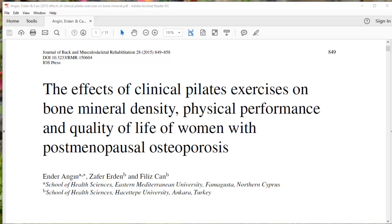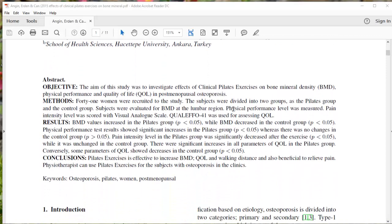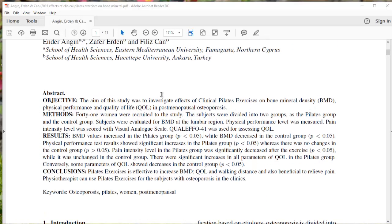The article is from 2015. In general, research articles are going to be published in peer-reviewed journals. This is a peer-reviewed journal, and like a lot of Pilates research, it's coming into English language journals from international sources. So the first thing we want to do is look at the abstract.